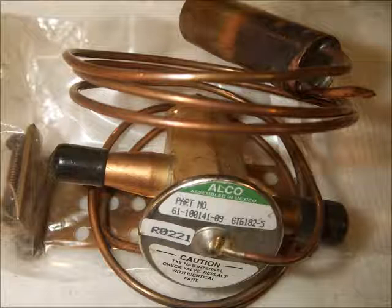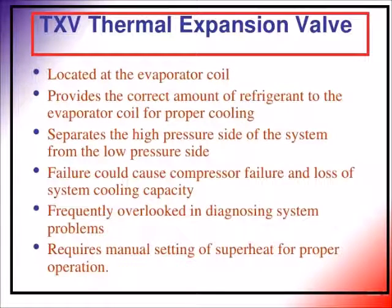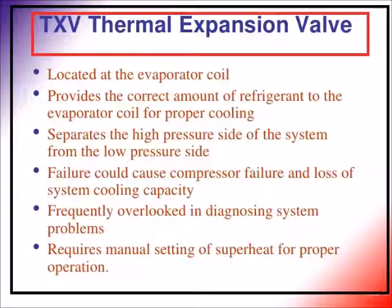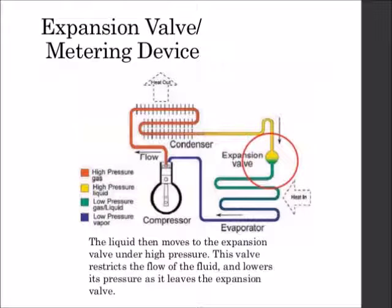As a refrigerant passes through a circuit containing these 4 elements, air conditioning occurs. The cycle starts when refrigerant enters the compressor in a low-pressure, moderate-temperature, gaseous form. The refrigerant is compressed to a high-pressure and high-temperature gaseous state. The high-pressure and high-temperature gas then enters the condenser, which converts it to a high-pressure liquid by transferring heat to a lower-temperature medium, usually ambient air. The high-pressure liquid then enters the expansion valve where the TX valve allows a portion of the refrigerant to enter the evaporator.